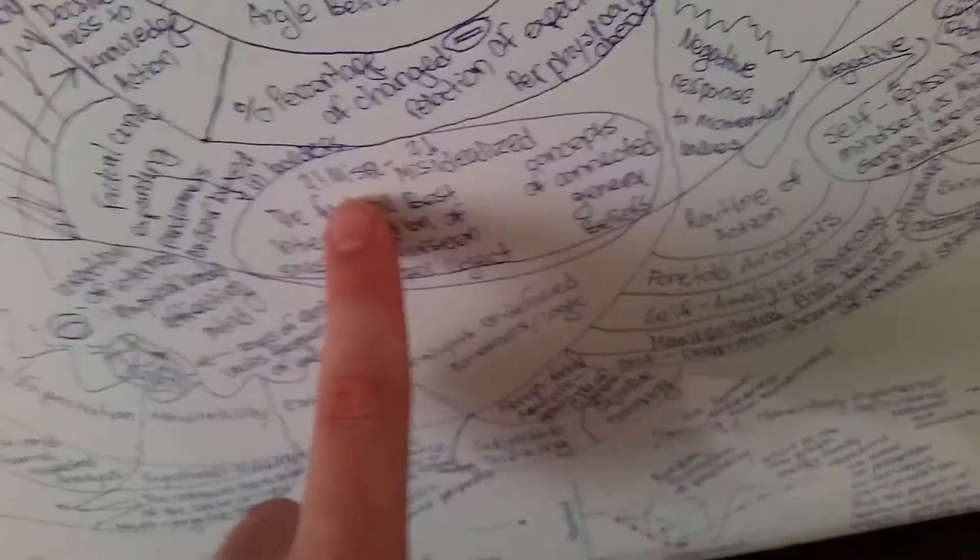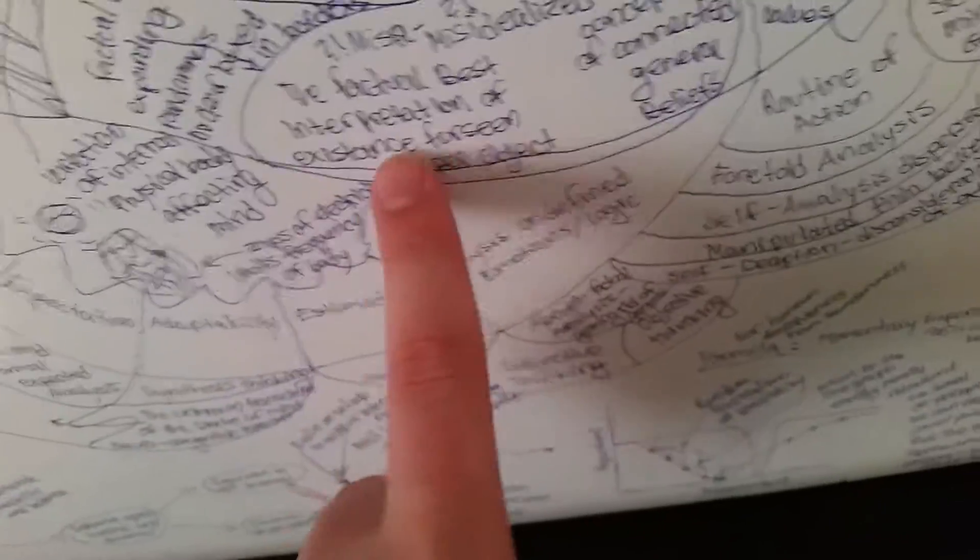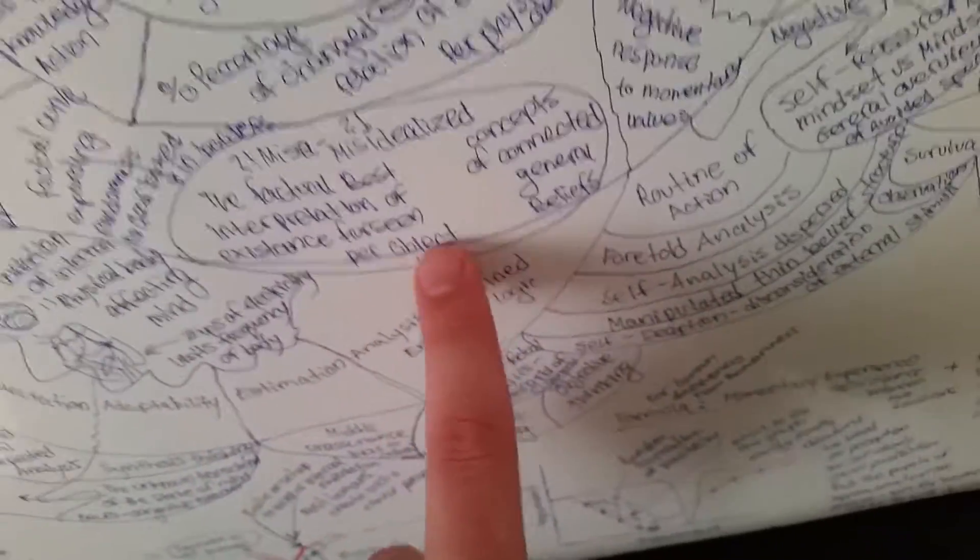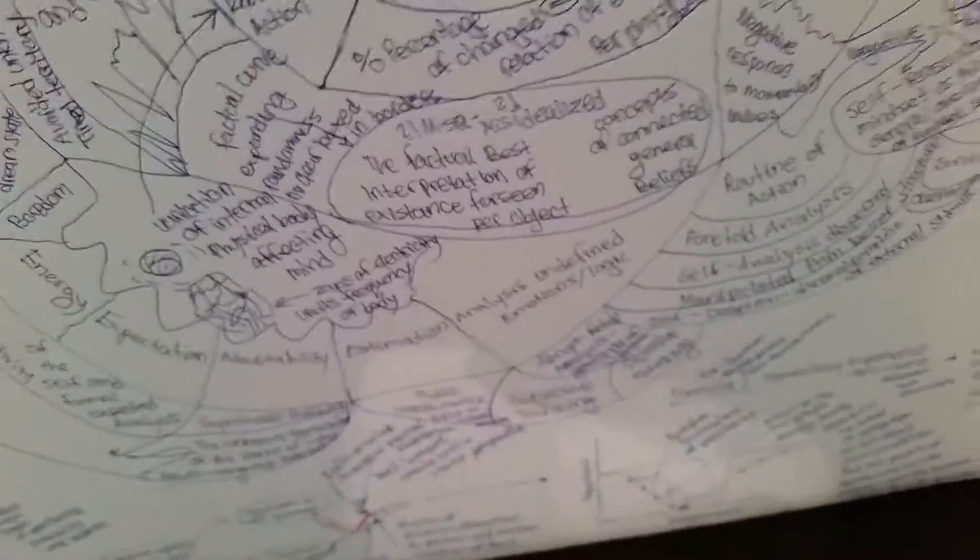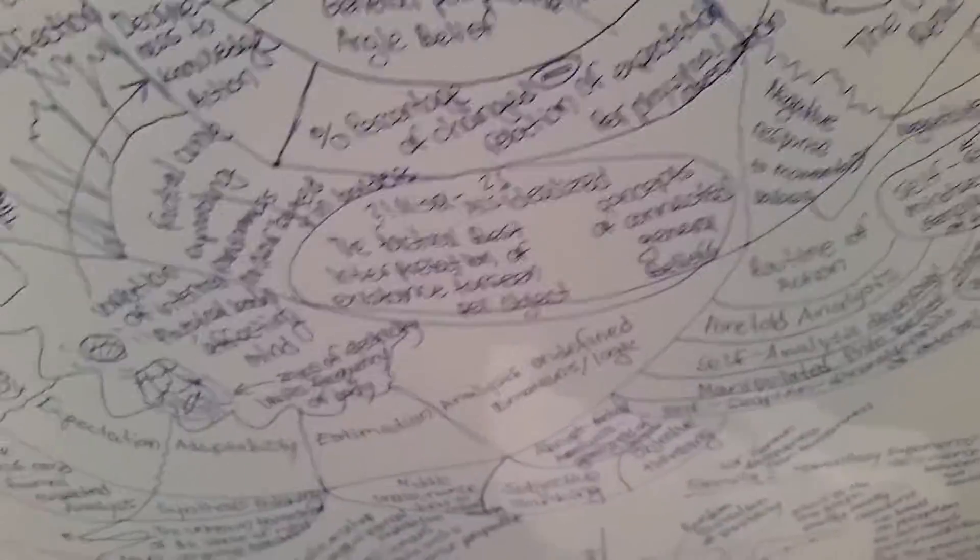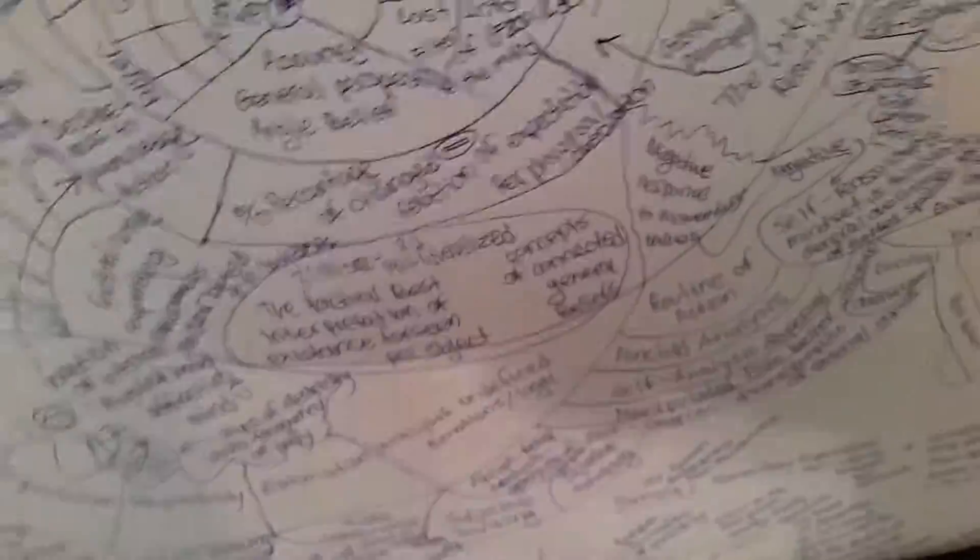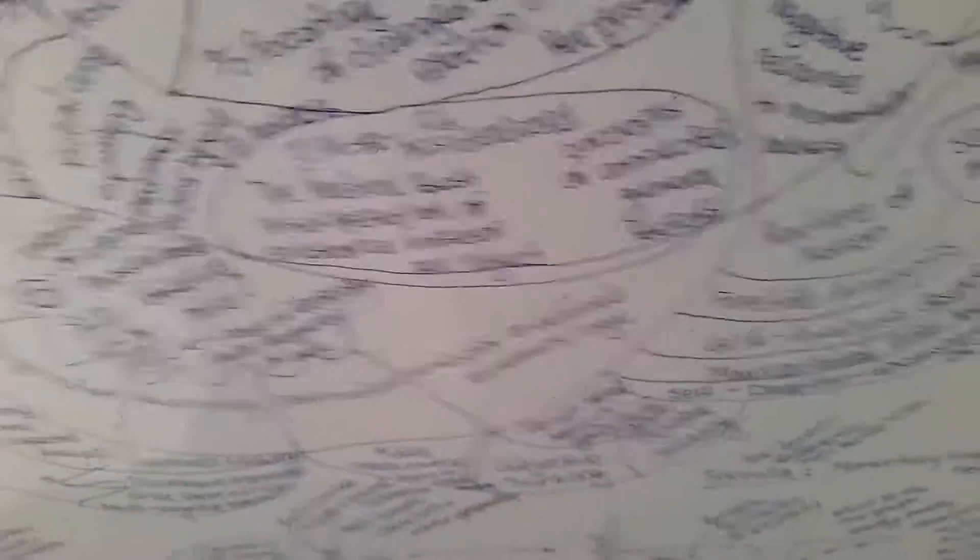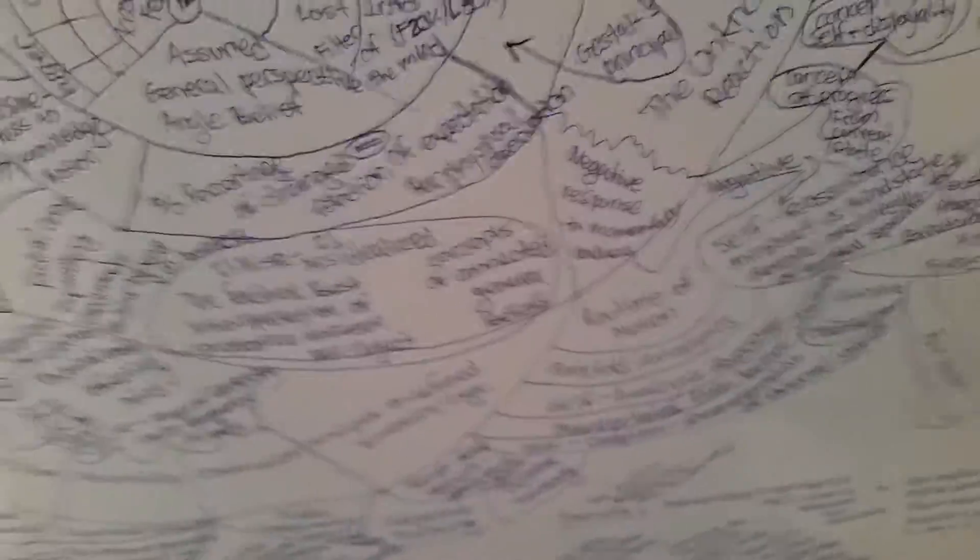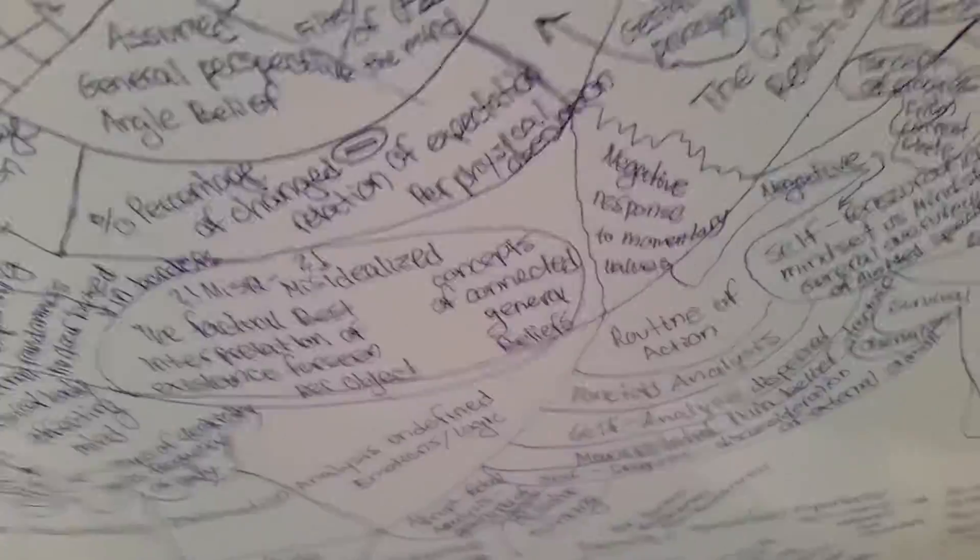Okay, now we're going to go to misidealize the factual best interpretation of existence per scene per object. So that is the best way that you could consider and accept open-mindedness to what people present to you or show you as a factual reference to the object in all of its ways, not skipping a way of it being an insignificant. Most likely concepts of connected general beliefs.